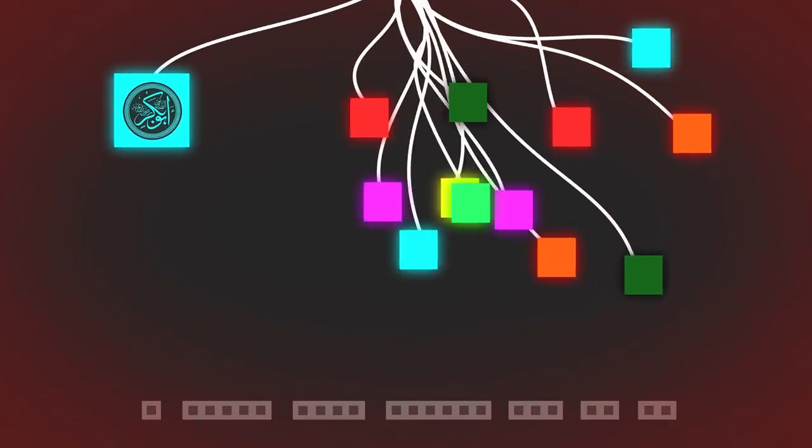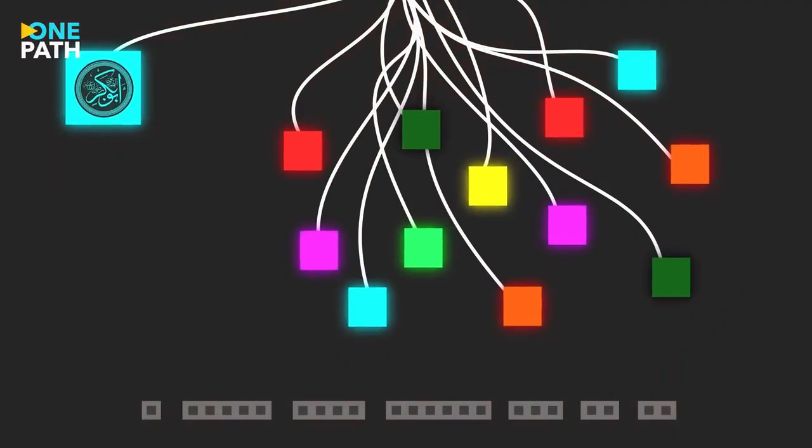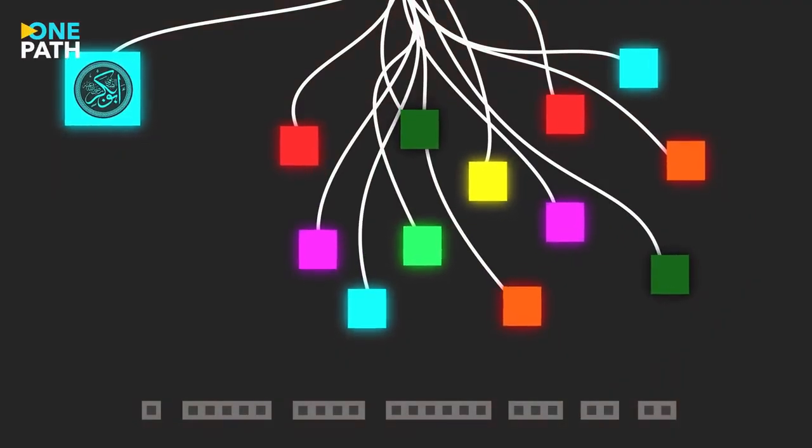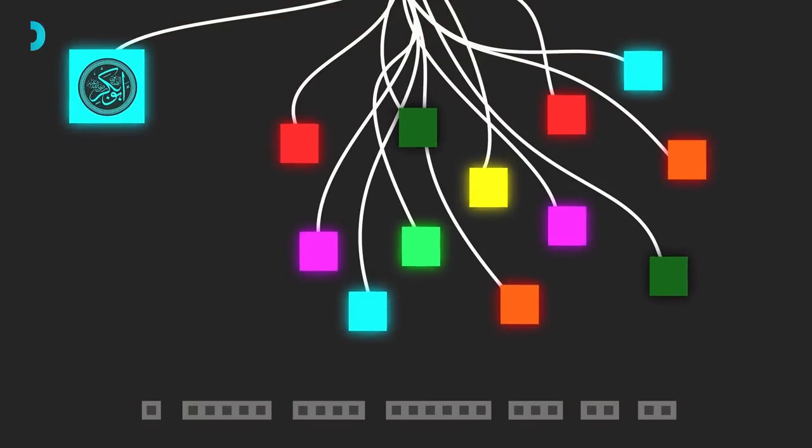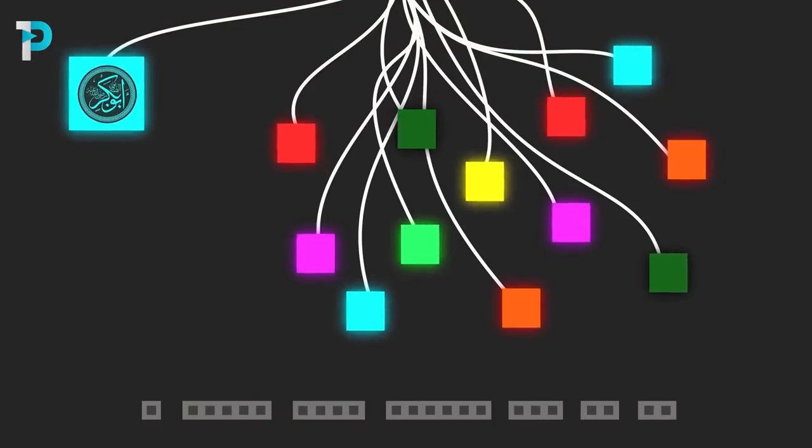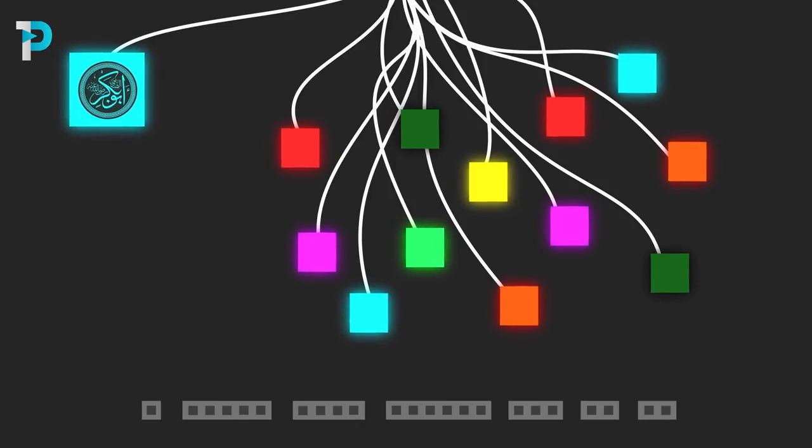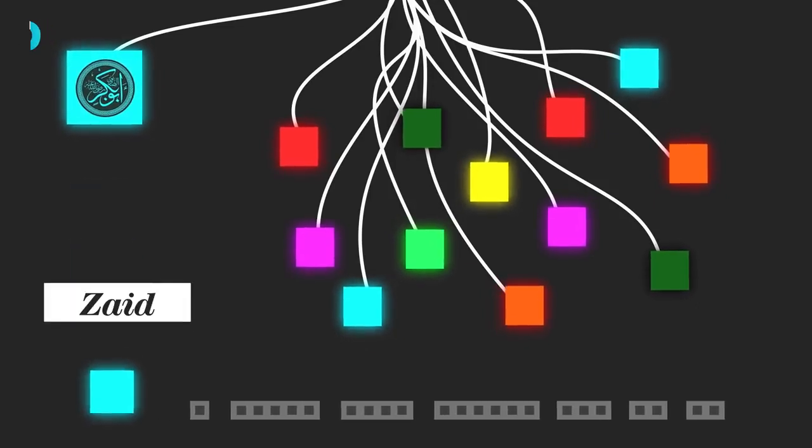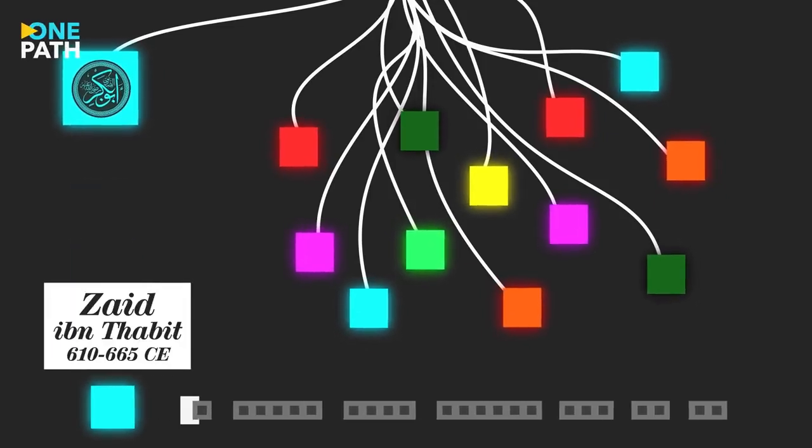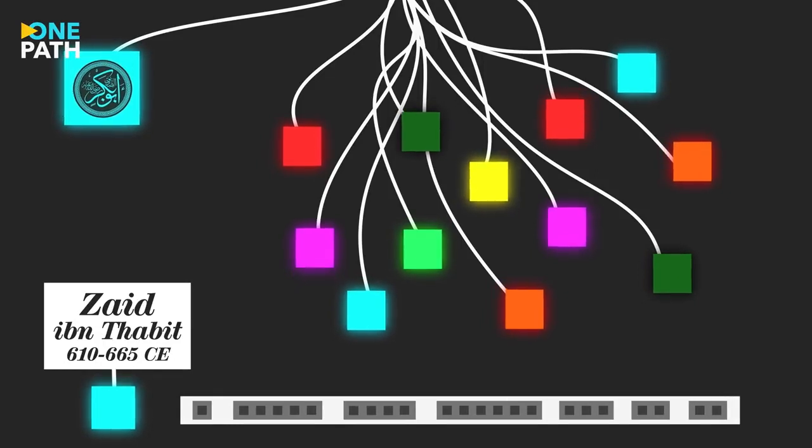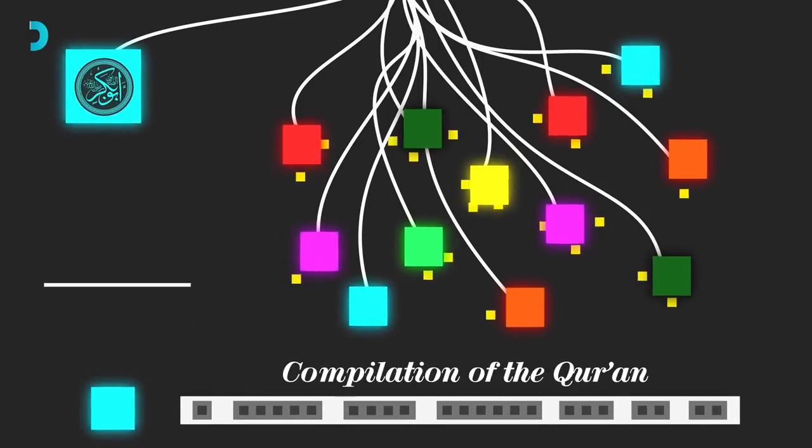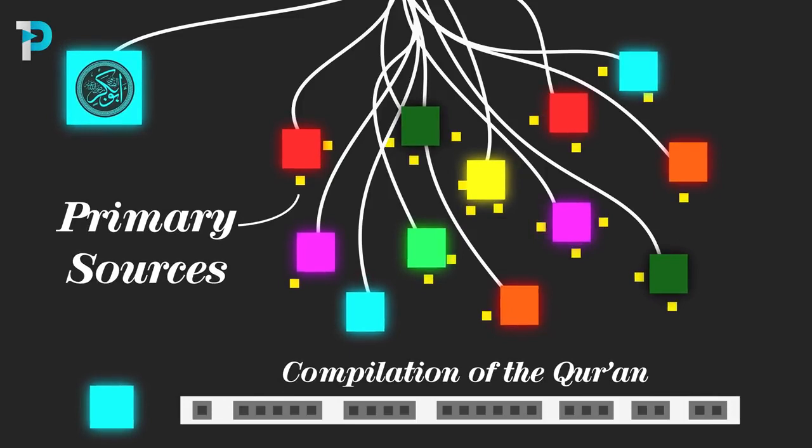Many of these memorizers, known as Huffad, did survive, but it highlighted the critical issue of preserving the entirety of the Qur'an, which was in danger if all of them were killed. Abu Bakr decided to appoint Zayd ibn Thabit to compile all of the written verses of the Qur'an into one collection, using only those verses which had been written in the presence of the Prophet himself.